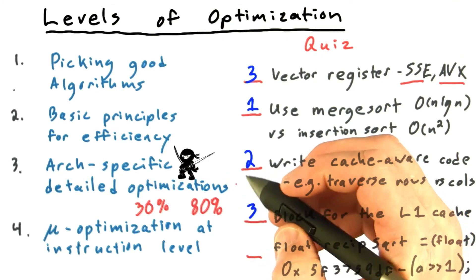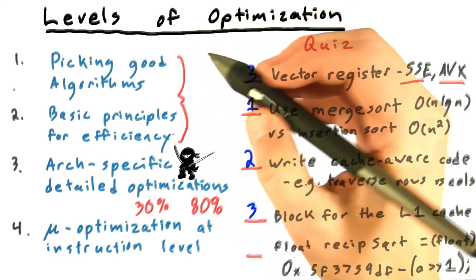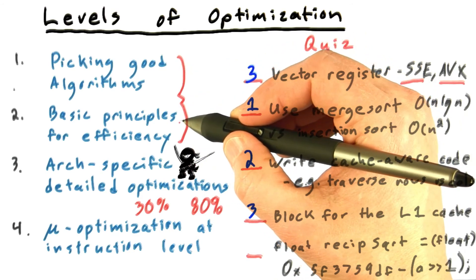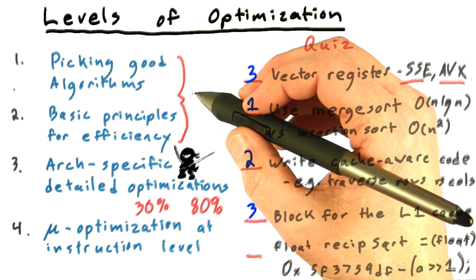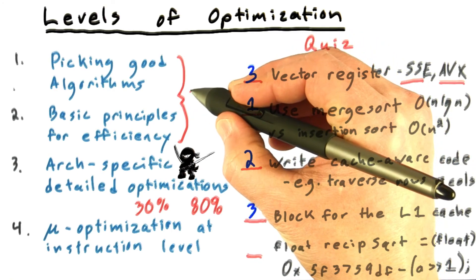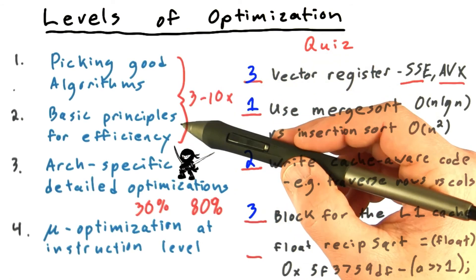This is versus the speedups you might hope to get from just picking the right algorithm in the first place or just obeying the basic principles of efficiency on a GPU, such as coalescing your global memory accesses. These can often make a difference of three times, ten times, sometimes more.